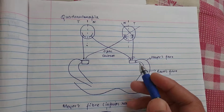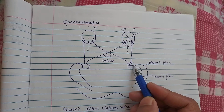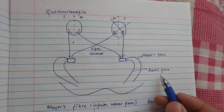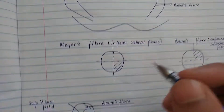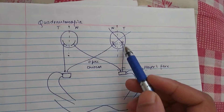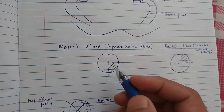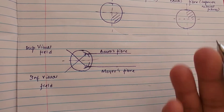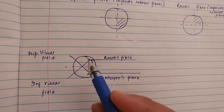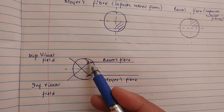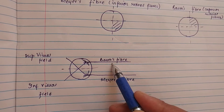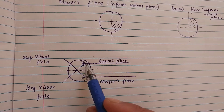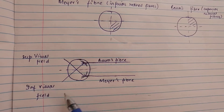After the synapse in the lateral geniculate body, fibers give rise to two main pathways: the Meyer fiber (Meyer's loop) and the Baum's fiber. The Meyer fiber carries nerve fibers from the inferior retina, while the superior retinal fibers travel along Baum's fiber. The superior retinal fiber receives information from the inferior visual field, and the inferior retinal fiber carries information from the superior visual field.